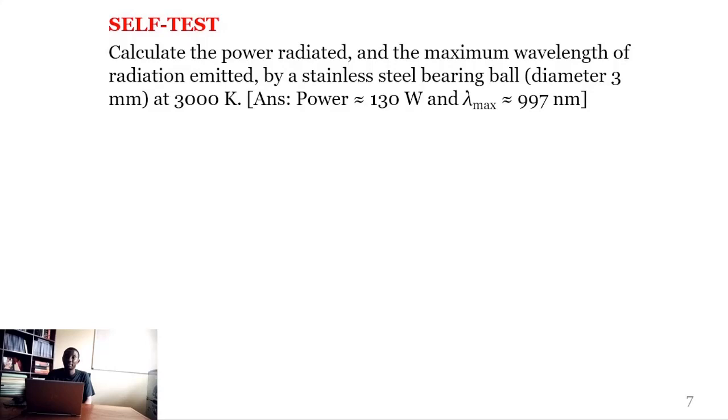So to test whether you actually understood the lecture or not, there is a self-test question here. It says calculate the power radiated and the maximum wavelength of radiation emitted by a stainless steel bearing ball diameter 3 millimeter at 3000 Kelvin. If you do this question and find that the power is approximately 130 watts and the lambda max is 997 nanometers, then you are right.